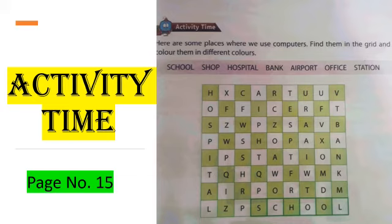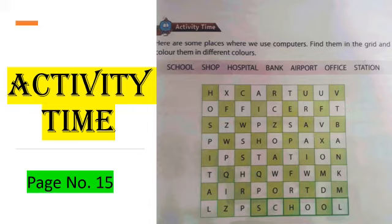Next is activity time. Please move to page number 15. What you have to do is find the places where we use computers and color them in different colors. The words you have to find are: school, shop, hospital, bank, airport, office, and station. I hope you will enjoy finding these words.